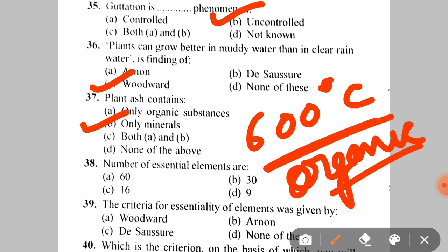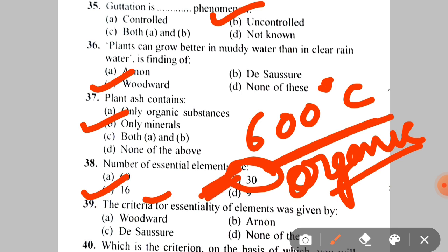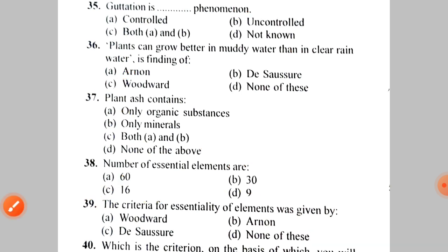Next question: the number of essential elements is A. 60, B. 30, C. 16, D. 9. There are 16 essential elements found in every plant. In other plants there may be 30 elements, but those extra elements are not necessarily present in all plants. The correct answer is C — 16.